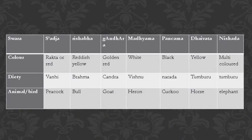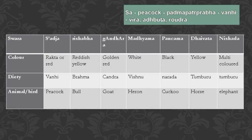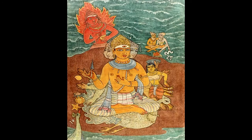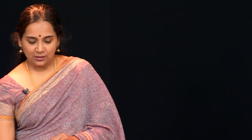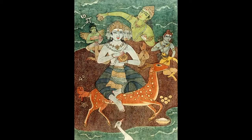Each Swara is also associated with a kala, a particular rasa, and finally with a particular deity — a Swaradevata. For example, Shadja is associated with the peacock; its color is Padma Patra Prabha, the redness of a lotus petal; its deity is Agni or Fire; and the rasas associated with it are Veera (valor), Adbhuta (wonder), and Raudra (anger). All seven Swaras have such associations, found in texts like Sangeetaratnakara.